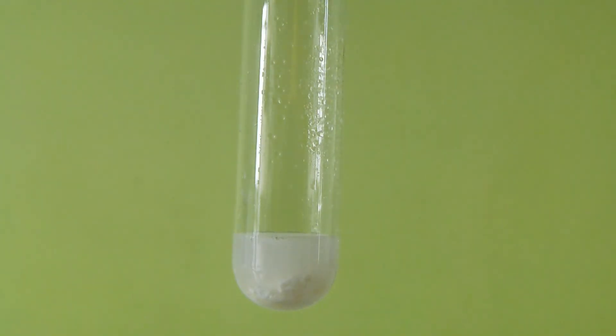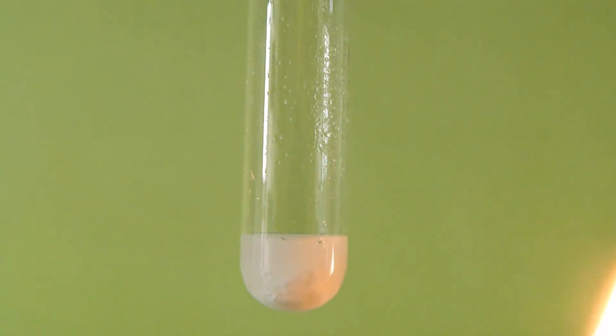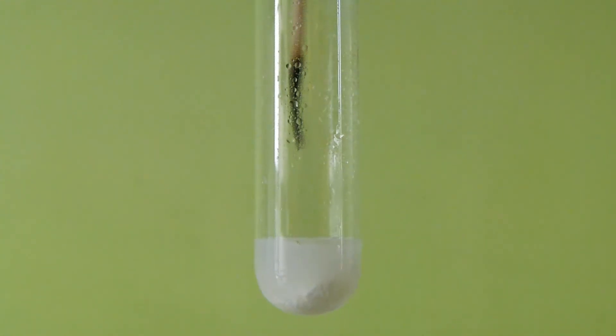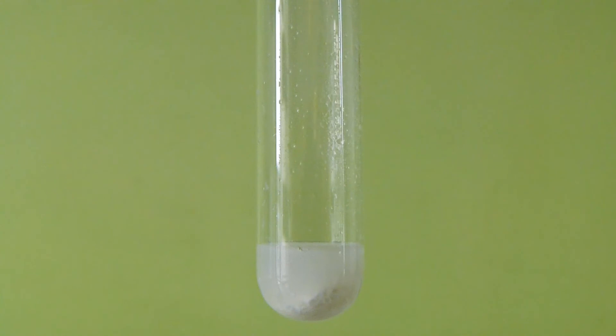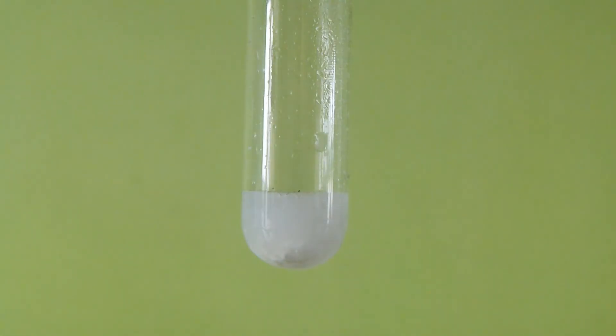To test for the presence of oxygen, I first insert a burning piece of wood, and you can see that it immediately is extinguished, which solidifies my theory of the bubbling being CO2 gas. To release the oxygen from the solution, we need to decompose the peroxide first, and for that I add this black piece of manganese dioxide.